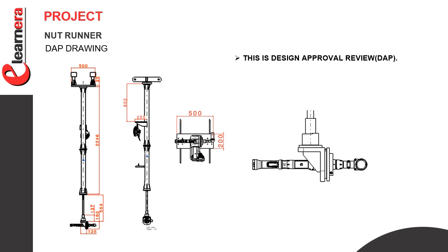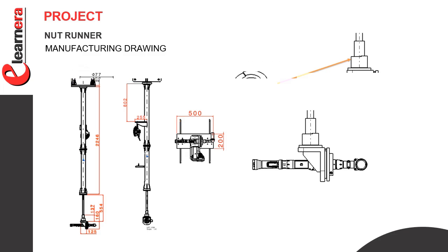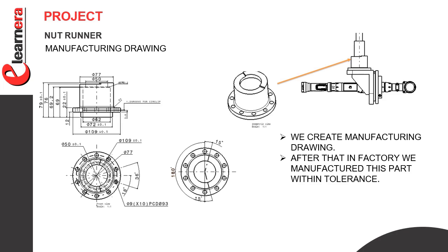In this slide we see the DAP — Design Approval Review. We create a DAP drawing in which we give all dimensions of the top tube: height, width, length, and working height. We also explain to the customer the technical specifications of the top tube. After DAP, we create manufacturing drawings of individual parts, showing dimensions and tolerances. This part is fixed on the top tube; its material is EN8. For increasing hardness we apply a hardening process, and after hardening the HRC is 38 to 42.